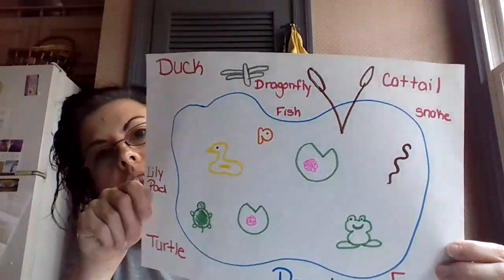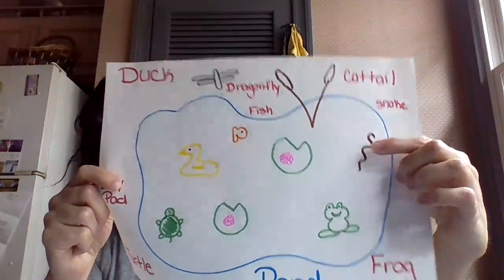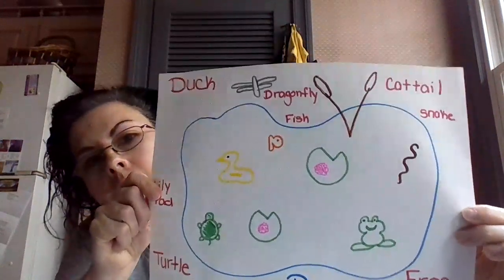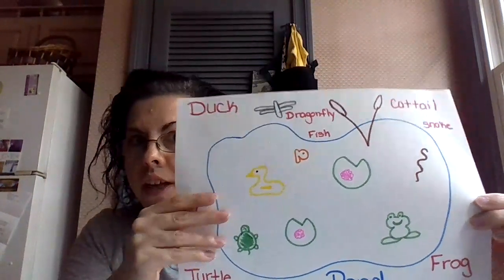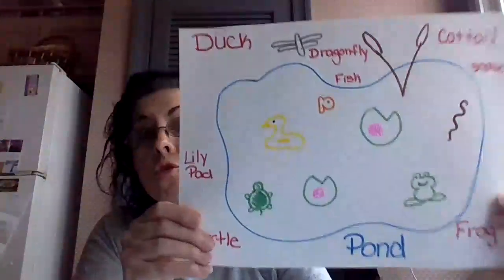Now let's take a look at my pond. I added a few things to my pond. I added a dragonfly, I added a snake, and I added a fish, because all of those things live in the pond. A pond is a small body of water. It's not salty water like the ocean. This is fresh water, like the rain that's falling from the sky right now — the water that we drink that doesn't have any salt in it. So we can drink it. A pond has fresh water in it.